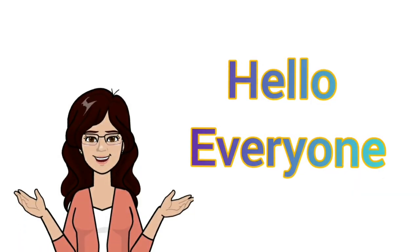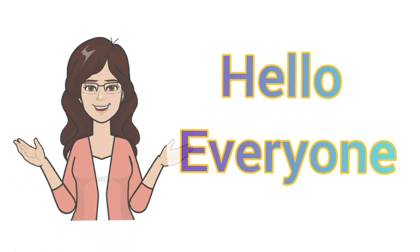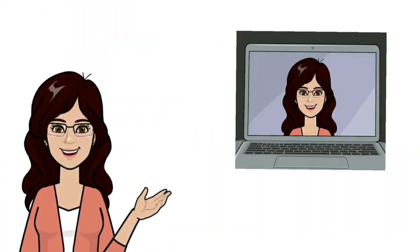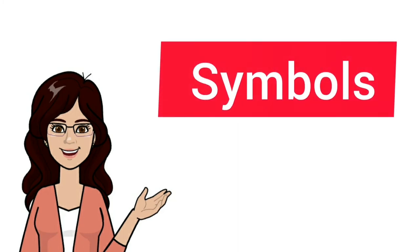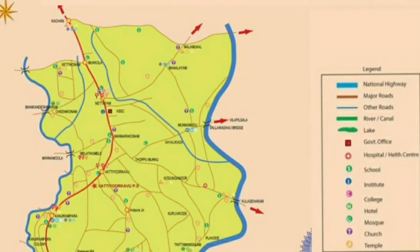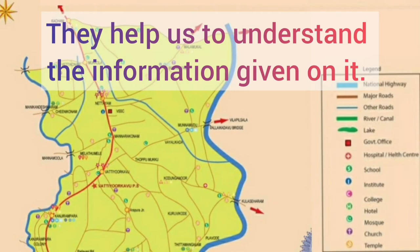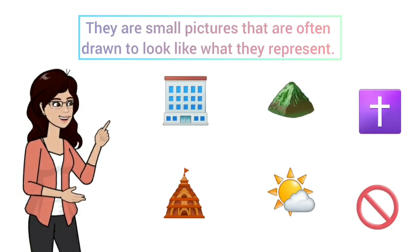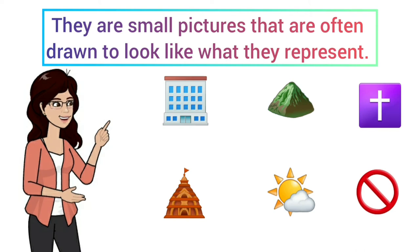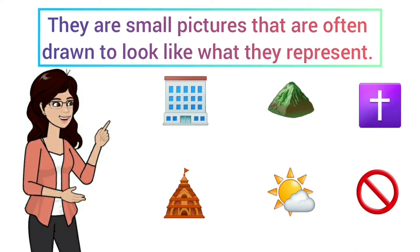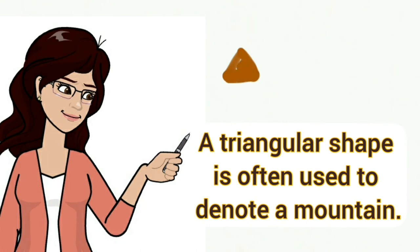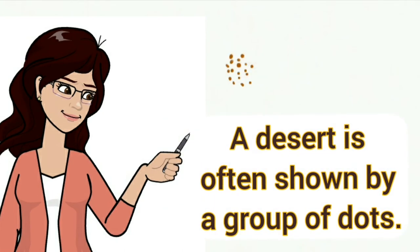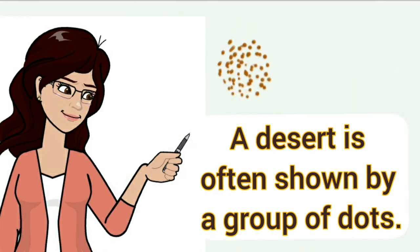In today's class we will study symbols used on a map. They help us to understand the information given on a map. They are small pictures that are often drawn to look like what they represent. For example, a triangular shape is often used to denote a mountain, and a desert is shown by a group of dots that might look a little bit like sand.